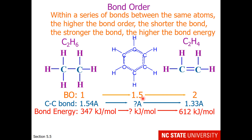For a benzene ring, the carbon-carbon bond order would be 1.5. The bond length would be the average of a single and a double bond, and the bond energy would likewise be the average between a single and a double bond.